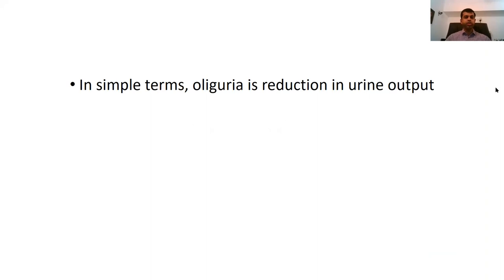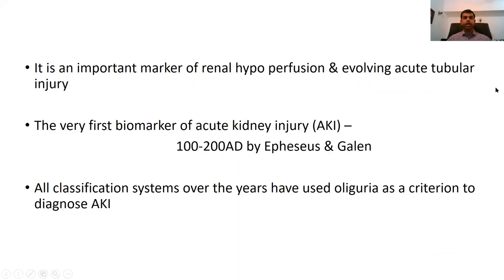Oliguria, in simple terms, is a reduction in urine output and is an important marker of renal hypoperfusion and evolving acute kidney injury. This is one of the very first biomarkers of acute kidney injury, recognized as far back as 100–200 AD. Over the years, all classification systems of acute kidney injury have used oliguria as a criterion to diagnose AKI.